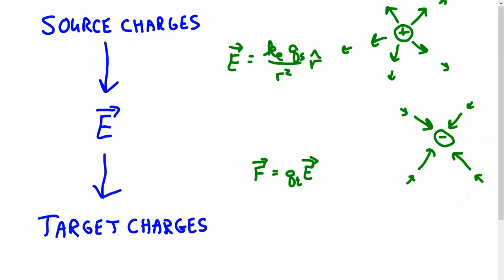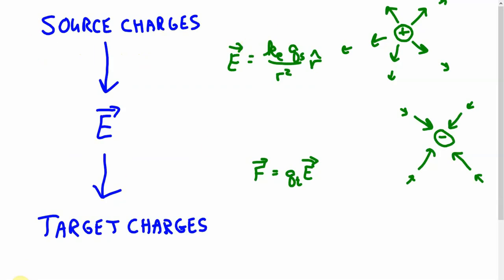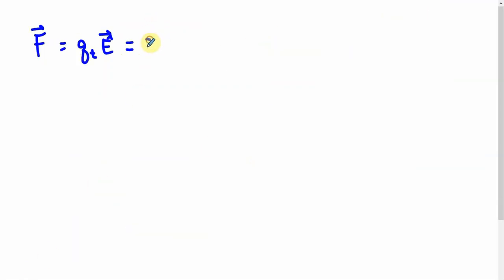So, I wanted to do an example. Actually, one more thing. So, if we put these two together, right? If we just link these two together, we would get that the force, which is the target charge times the electric field. And if that electric field is only due to one other source charge, then it would follow this formula. So, that'll be Qt times, and then it's this constant, times the source charge, divided by R squared, R hat. And usually, we put these two Qs right next to each other.